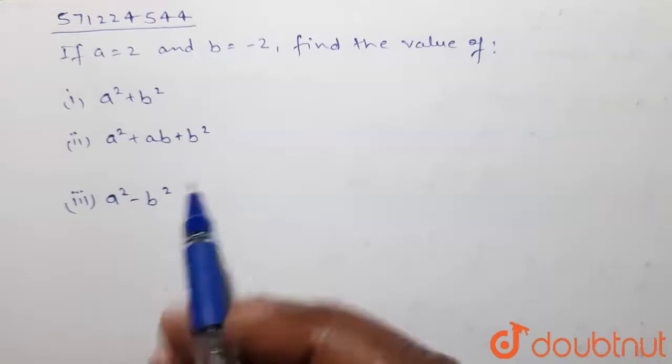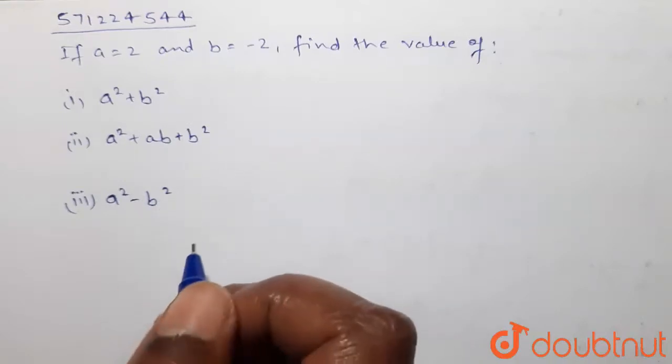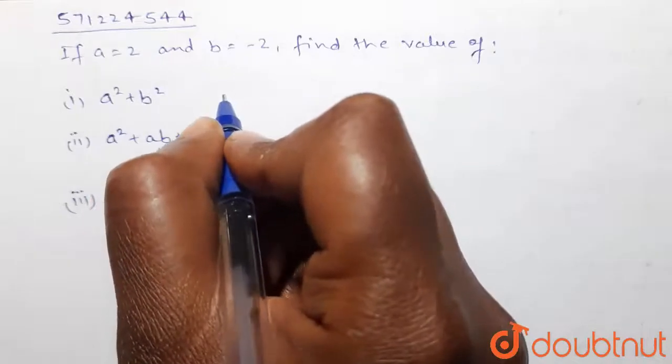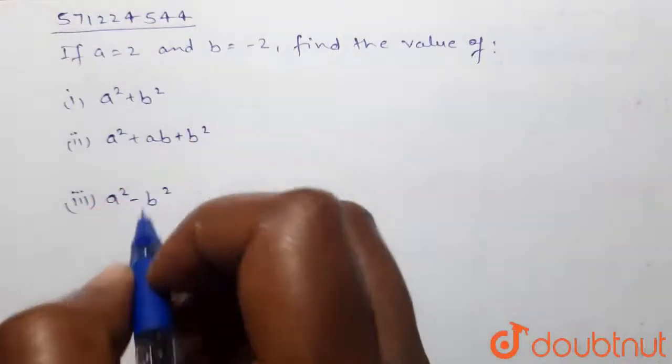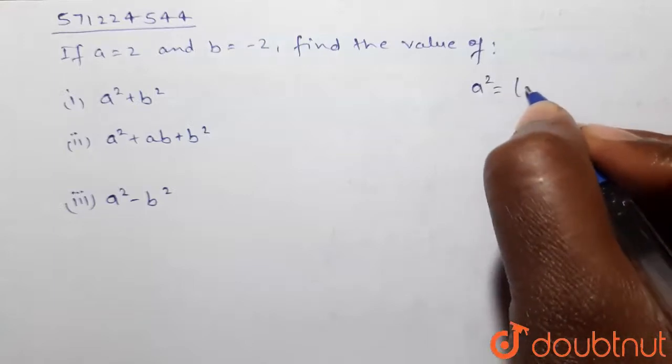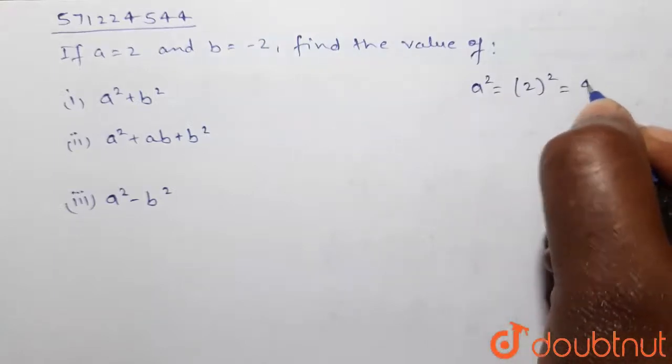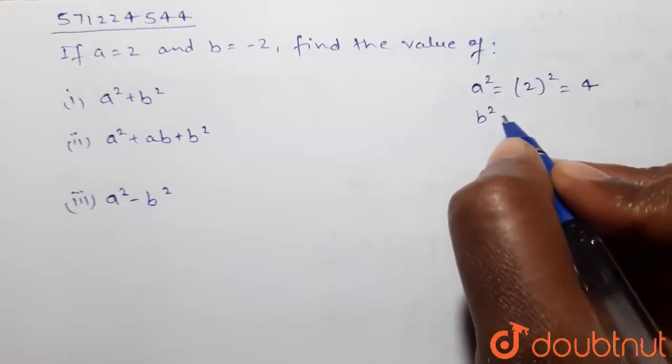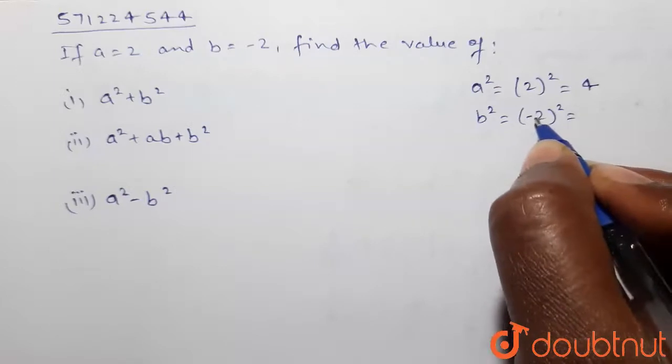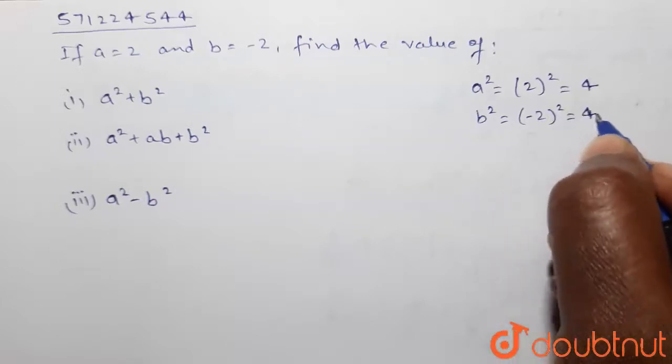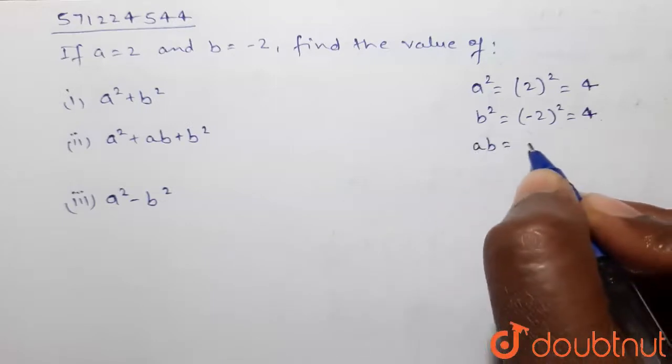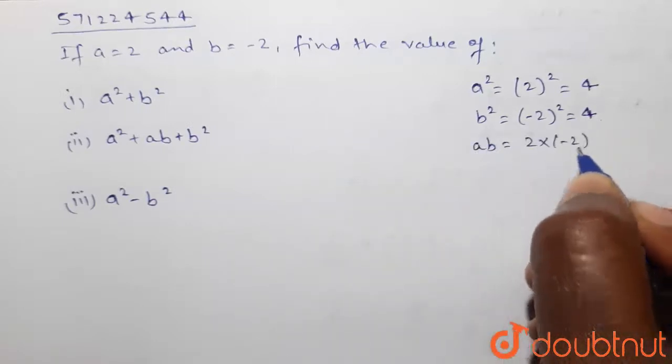So let's find out the value of the first one, a² + b². First we will find the individual terms. a² will be equal to (2)² which is equal to 4, and b² will be equal to (-2)² which is 4 also. Now value of ab will be 2 multiplied with -2, and this is equal to -4.